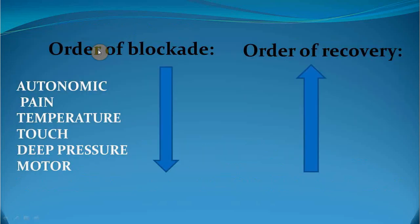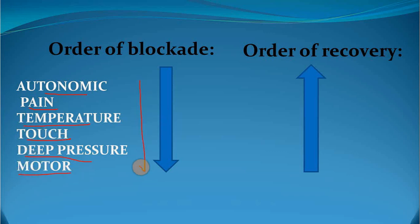Order of blockage: first the autonomic will be blocked, then pain, temperature, touch, deep pressure, and at the end the motor will be blocked. In the order of recovery, it is the reverse of the order of blockage.